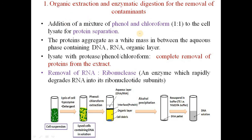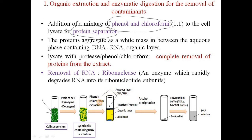In organic extraction, a mixture of phenol and chloroform in a 1:1 proportion is added to the cell lysate or cell suspension. The role of phenol and chloroform is to separate and aggregate the proteins. After addition of phenol and chloroform, different layers are obtained. The cell debris or contamination settles at the base, the organic layer contains other cell components like RNA and proteins, and in the upper part there is protein aggregation as a white mass.